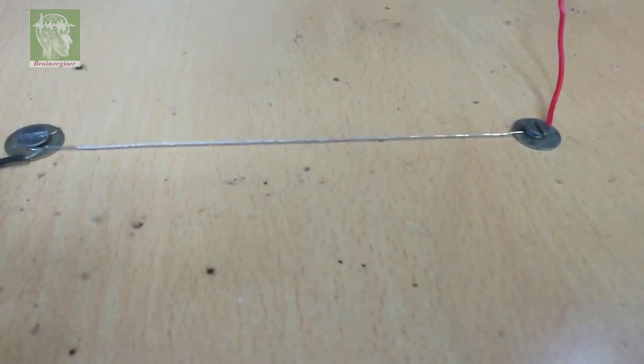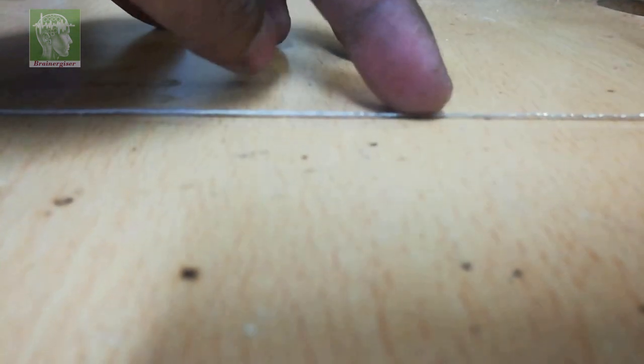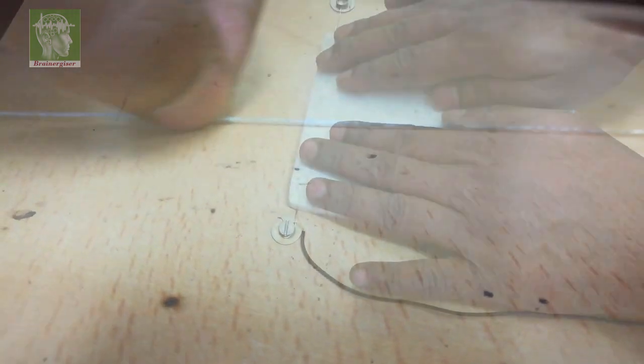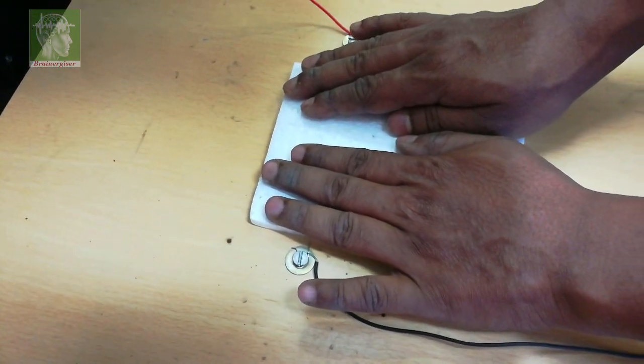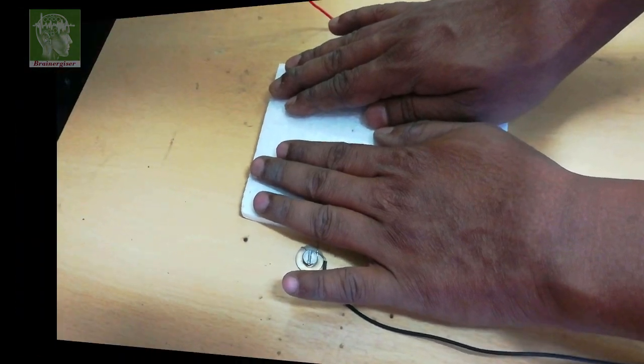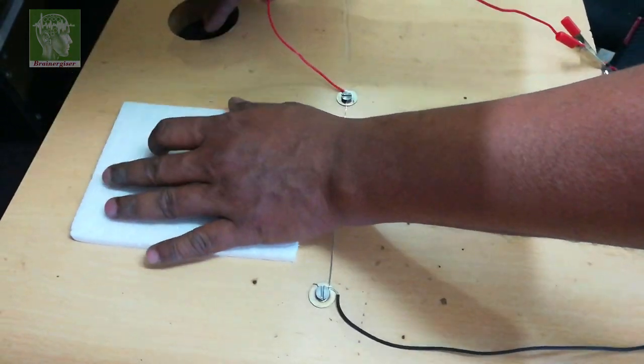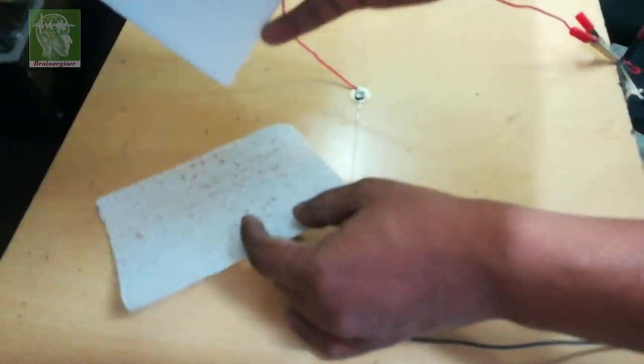I made the thermocol sheet with this thermocol cutter which is made up of 32 SWG nichrome wire. Link is given in the description. I have applied 5 volt 1 ampere current, gradually passed the thermocol and got this thin sheet.